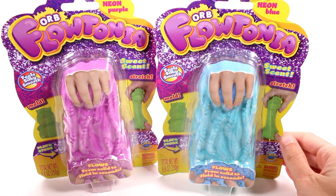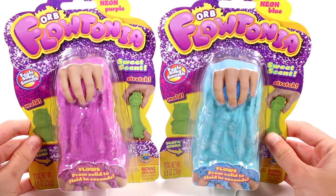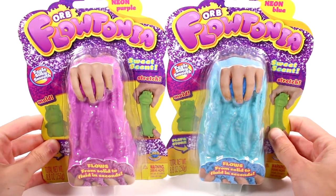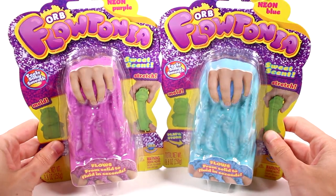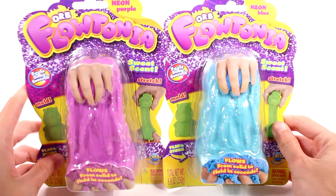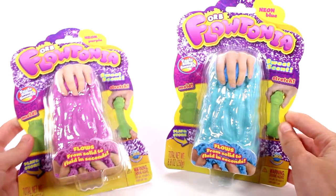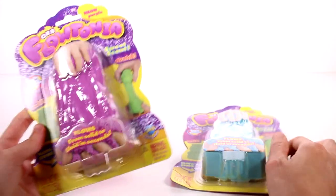Hi everyone, it's Tiffany. I am here with the new Orb Flowtonia. I do want to thank them for sending this to me for free to open up with you guys. So we have neon purple and neon blue. Feels silky smooth, we can mold, we can stretch, and they both have a sweet scent. Flows from solid to fluid in seconds.